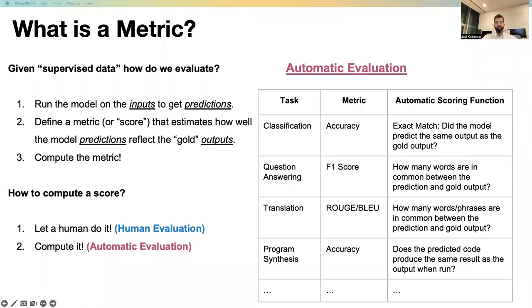In program synthesis, one way to assess the performance of the model is using accuracy and assessing whether the predicted code, for example, produced the same result as the output when run.